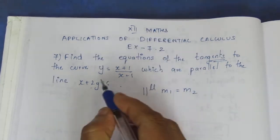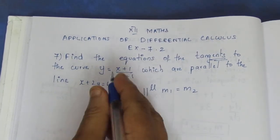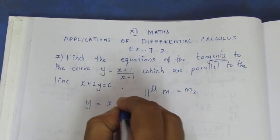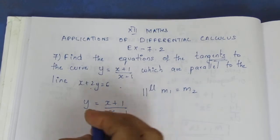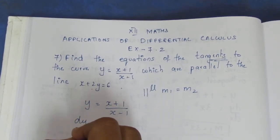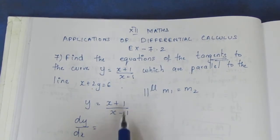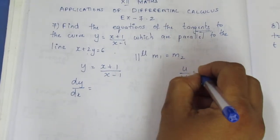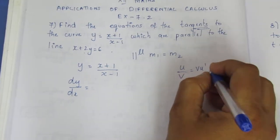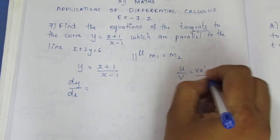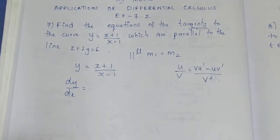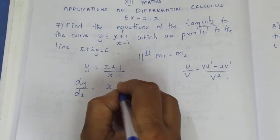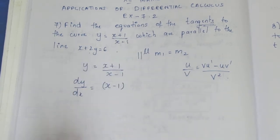So first we need to differentiate the curve equation. y is equal to x plus 1 by x minus 1. We differentiate this. dy by dx — this is a u by v form, so we use the quotient rule: v times du minus u times dv, all divided by v square.